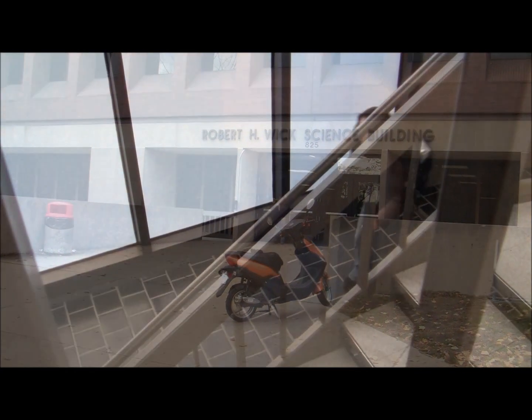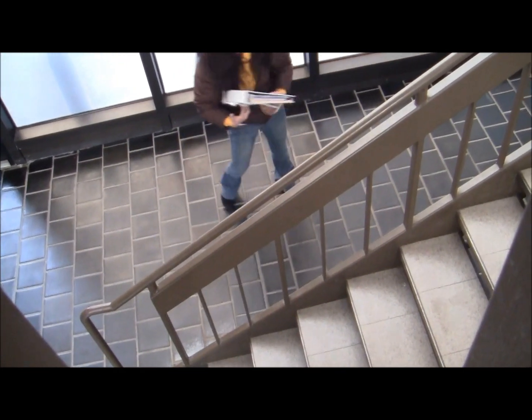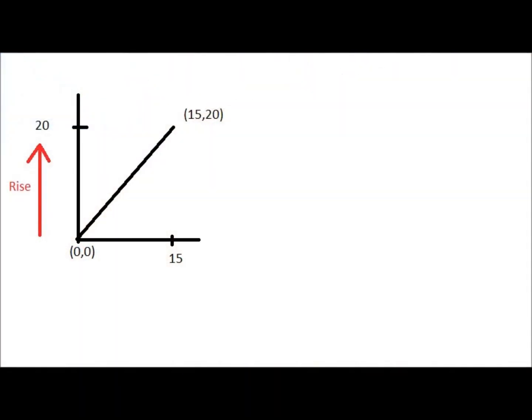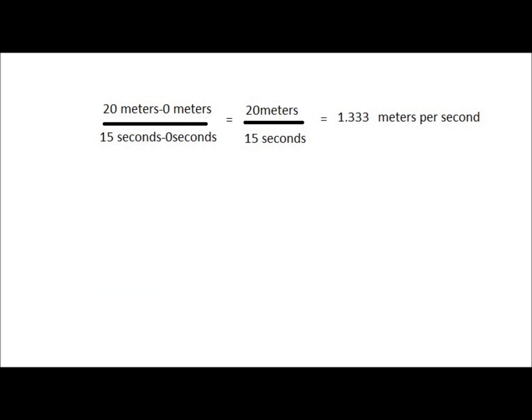With 20 seconds and 20 meters to go, Megan loses her books! With the unexpected delay to pick up her books, she now only has 15 seconds to move 20 meters. So, to see how fast she'll have to move to make her test on time, we take her rise — in this case 20 meters — and divide by her run — in this case 15 seconds. She'll have to move at a pace of 1.33 meters per second to make her test on time.